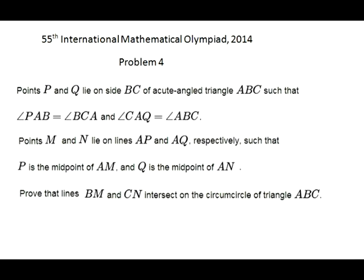Points P and Q lie on side BC of acute angle triangle ABC, such that angles PAB and BCA are congruent, and angles CAQ and ABC are congruent.